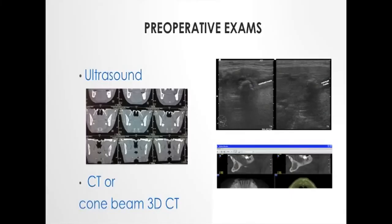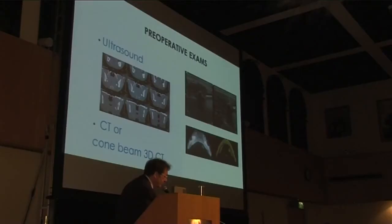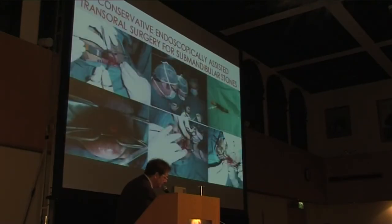These are preoperative examinations performed before surgery. The most important thing, together with manual palpation of the stone in the oral floor, is ultrasonography. It is important to verify the relationship between the stone and the mylohyoid muscle in order to check for the position of the stone in the hilar or perihilar region.